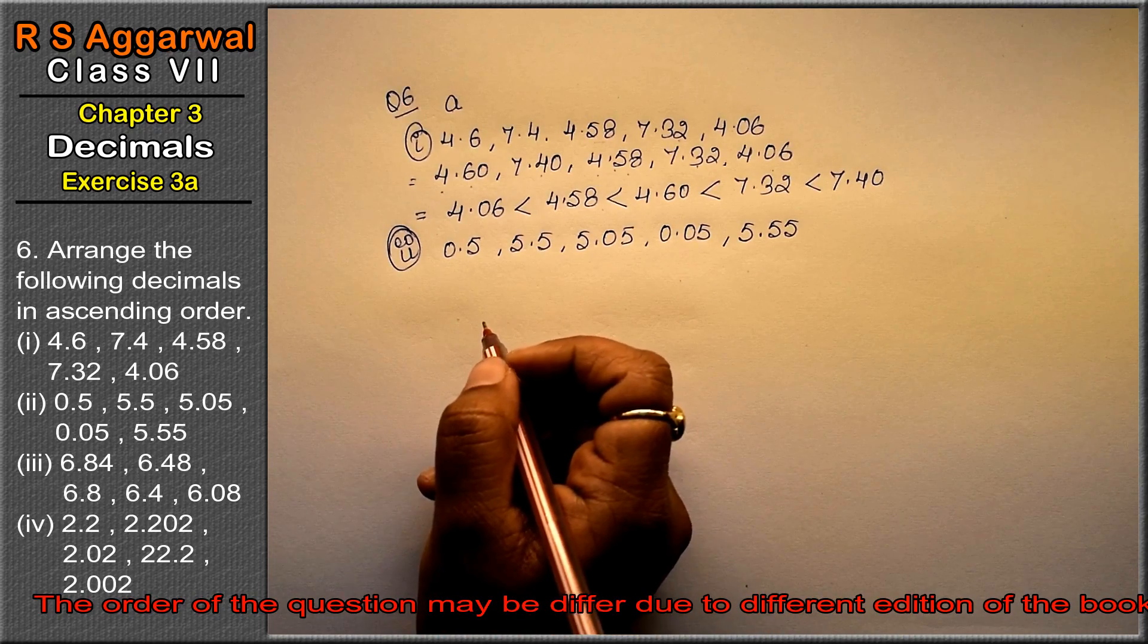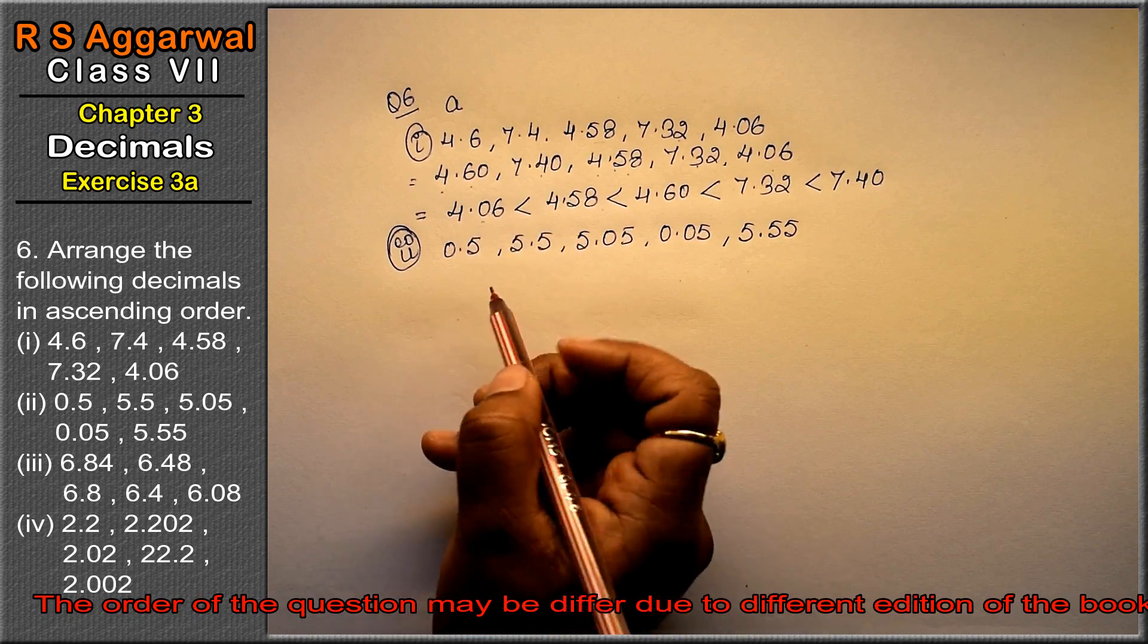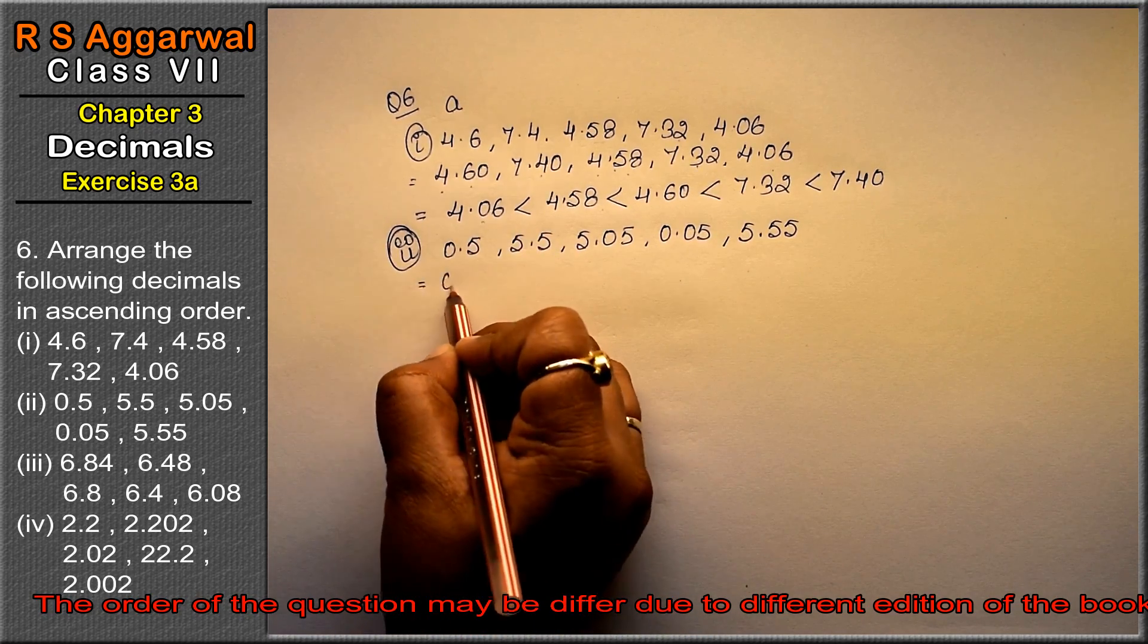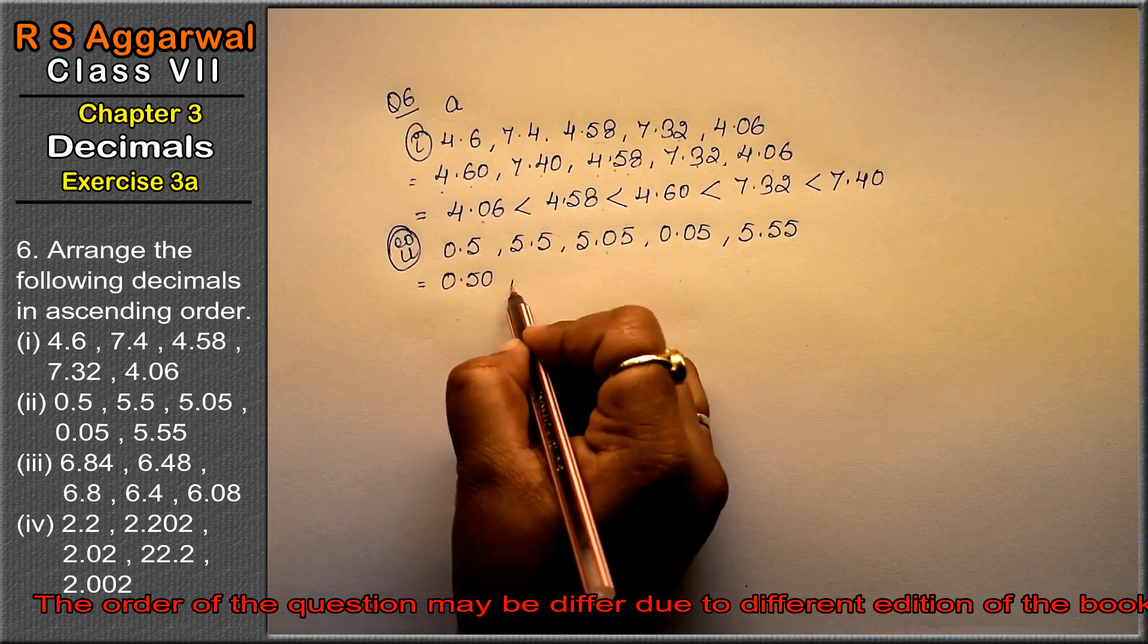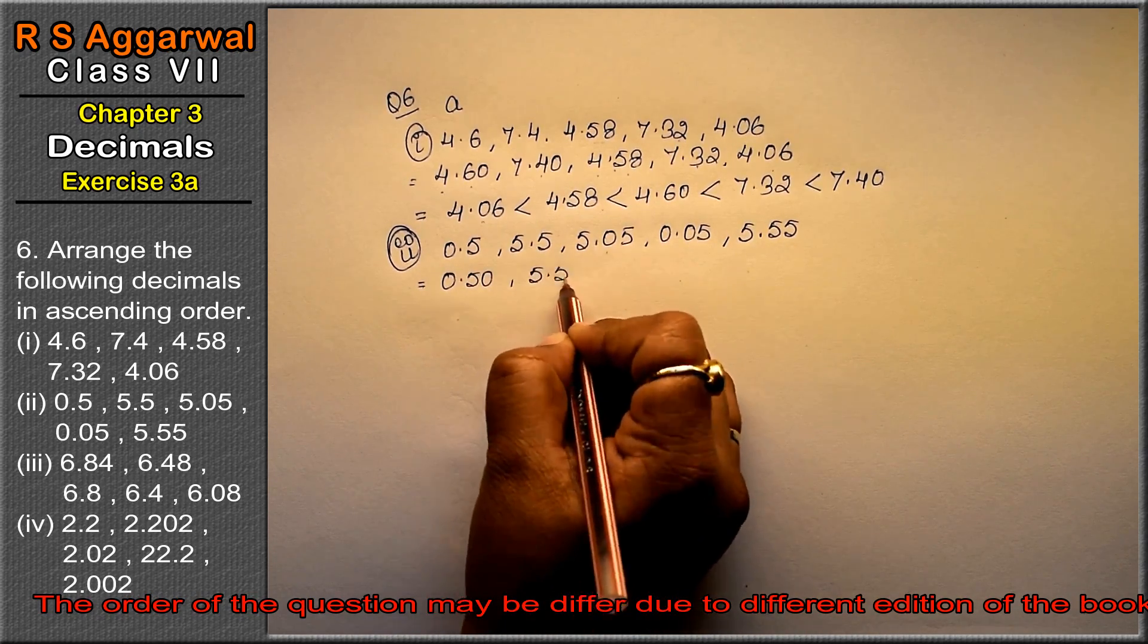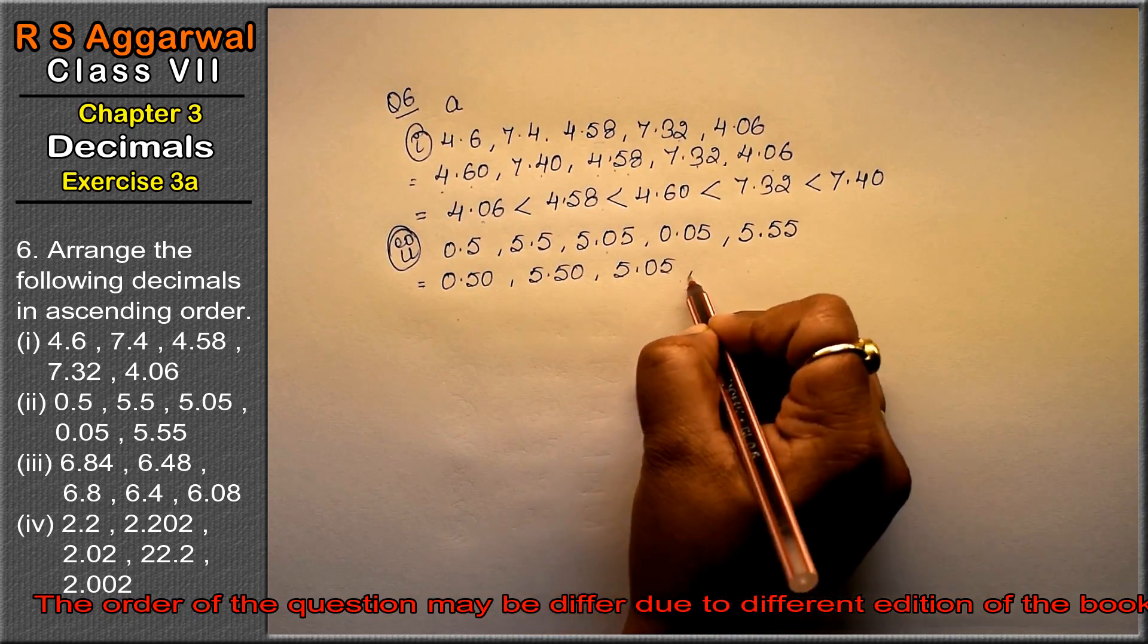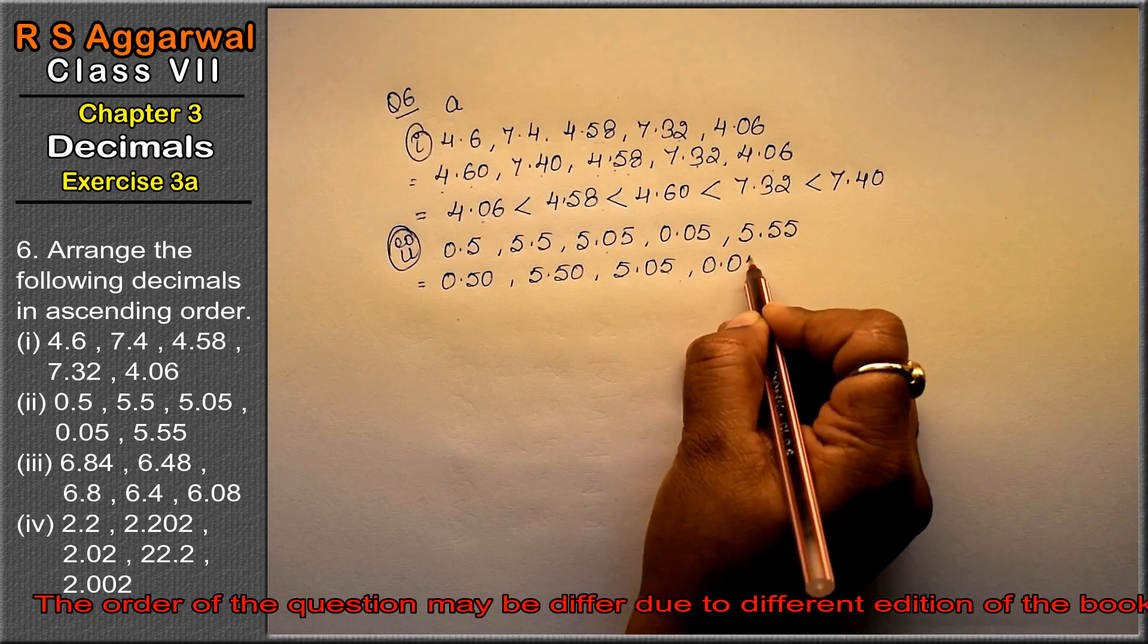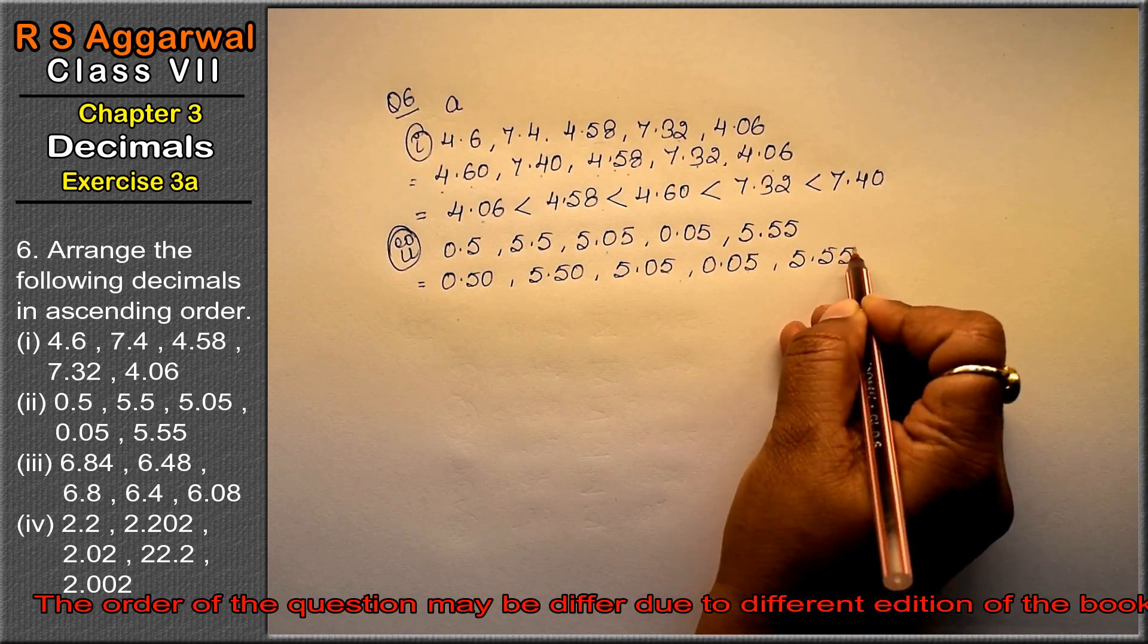Friends, you want to do it in like fraction or not, it's your wish. I'm going to explain it in like fraction. Two decimal places. So: 0.50, 5.50, 5.05, 0.05, and 5.55.